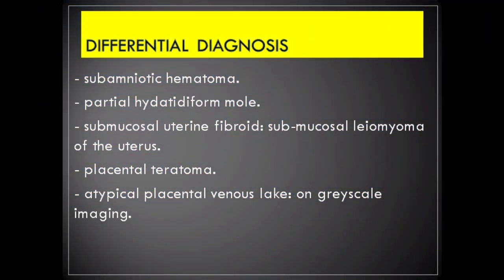Differential diagnoses include subamniotic hematoma, partial hydatidiform mole, submucosal uterine fibroid (submucosal leiomyoma of the uterus), placental teratoma, and atypical placental venous lake on grayscale imaging.